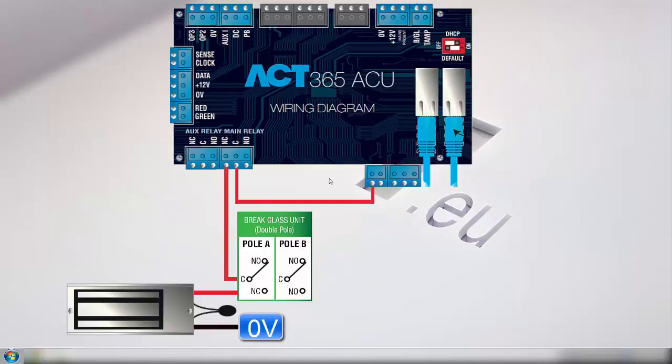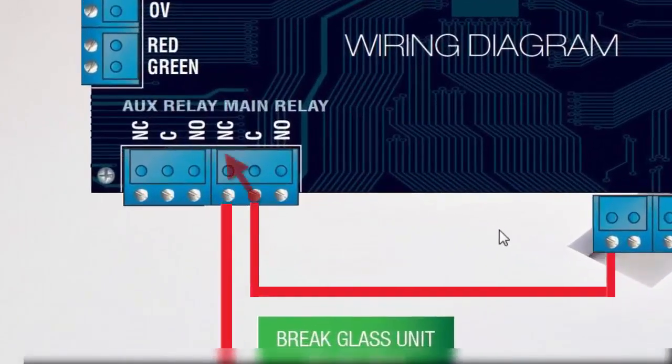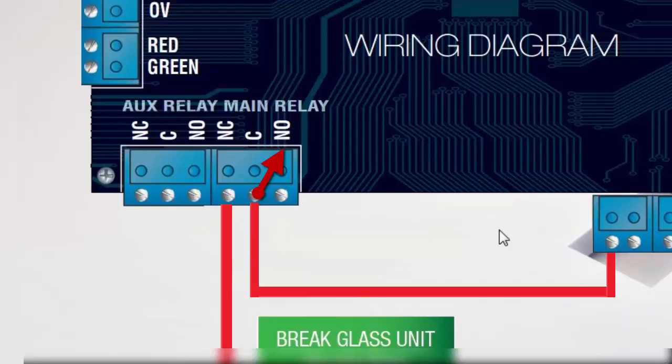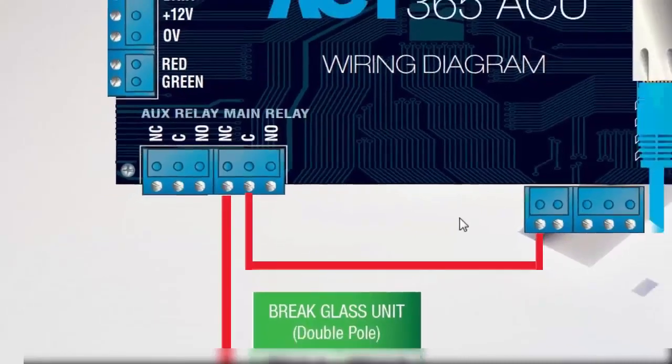In its normal state there is continuity or a connection between common and normally closed. When the relay is energized it swaps state and the armature connects common and normally open, breaking the connection between common and normally closed. The break glass uses the same principle.